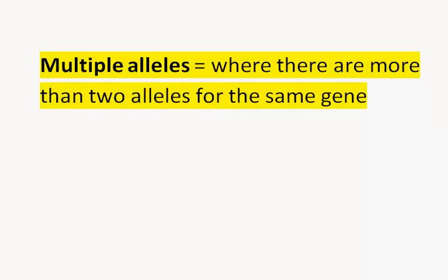The classic example of this is blood type in humans, where we have three possible alleles. Following the rules of genetics, we use the same letter for everything. We have type A blood, type B, and type O.